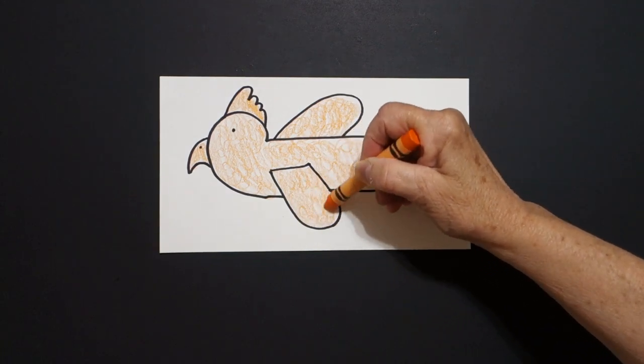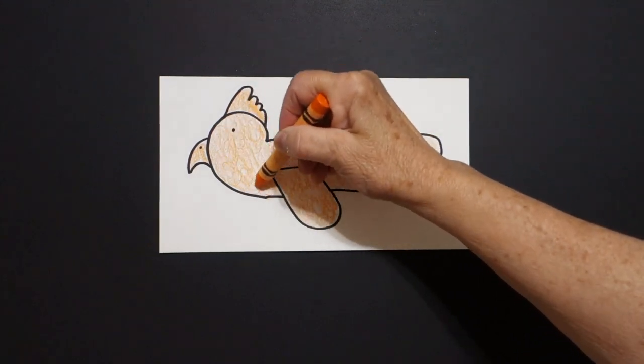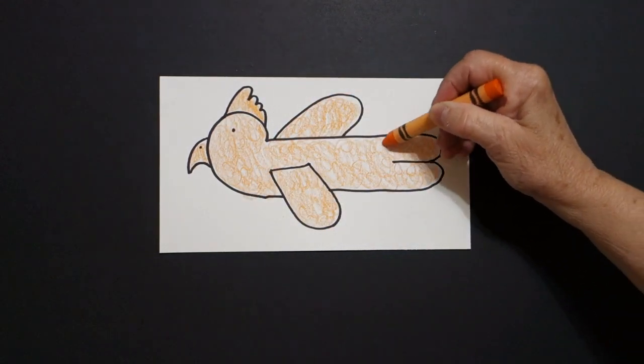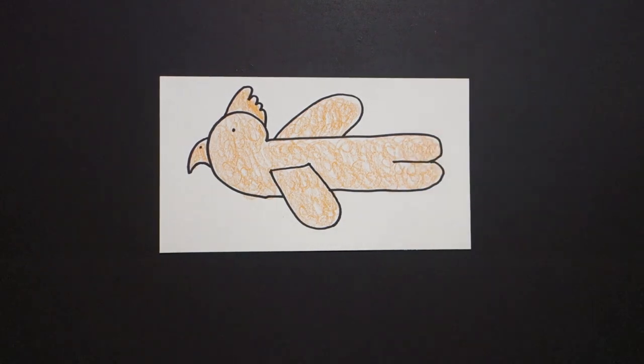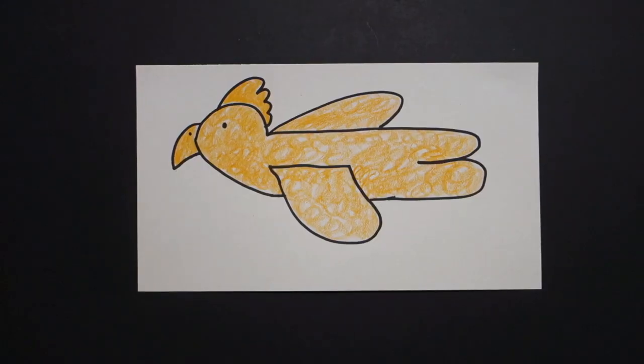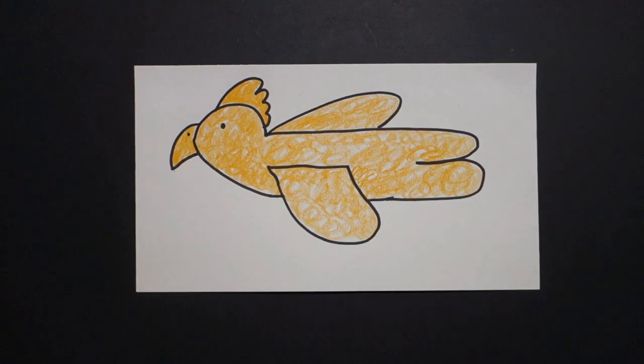That's all. Okay. Now, you can use a different color, but I used orange. Let's see what this looks like all colored in. Okay, here is my big orange bird all colored in. Okay, bye-bye.